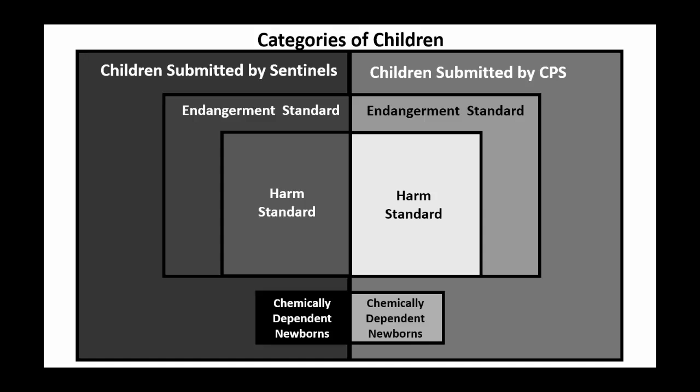There are several categories of children in the NIS-4 data. The NIS-4 data include children submitted by sentinels and those investigated by CPS whose maltreatment fit the harm or endangerment standard. Additionally, chemically dependent newborns are included in the NIS-4 PUF data as a special subgroup of interest to the field. The NIS-4 study does, but the distributed PUF data do not include children who were classified not countable. The PUF data do not contain every data item on the collection forms.